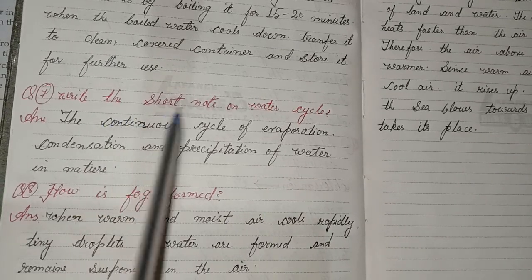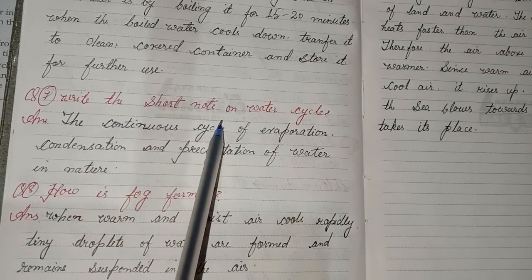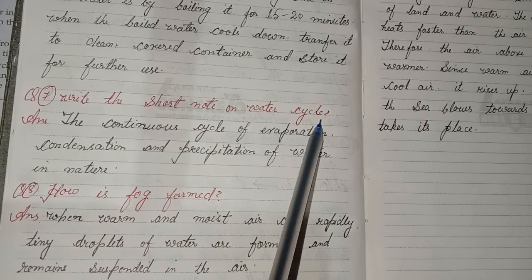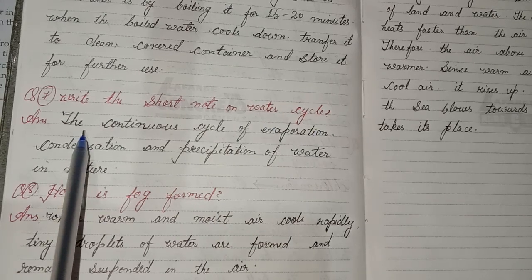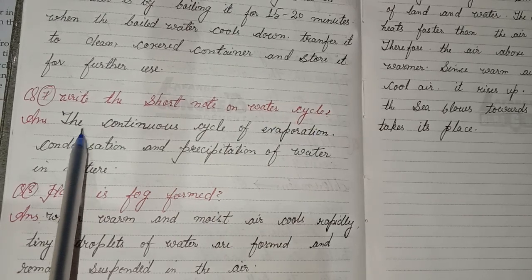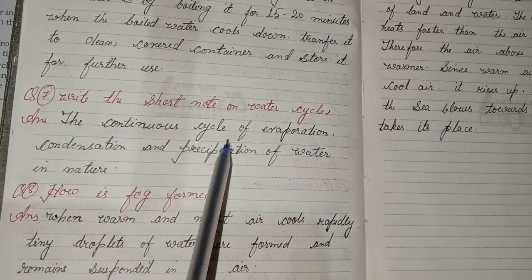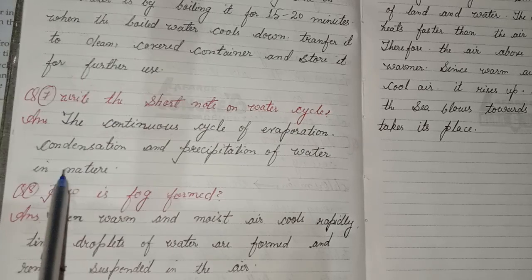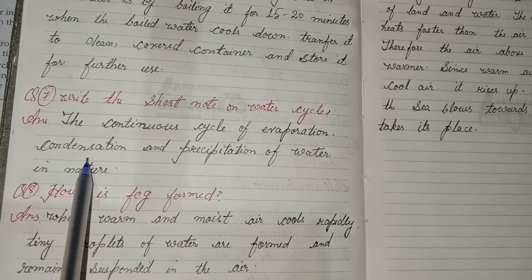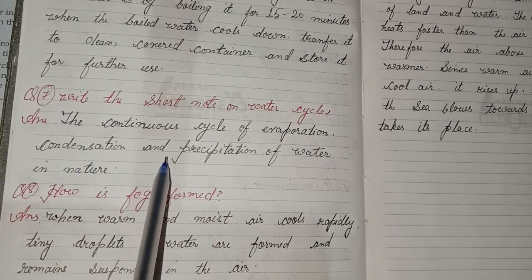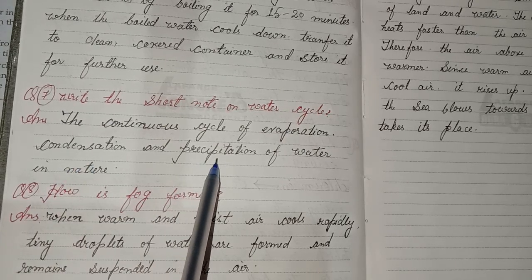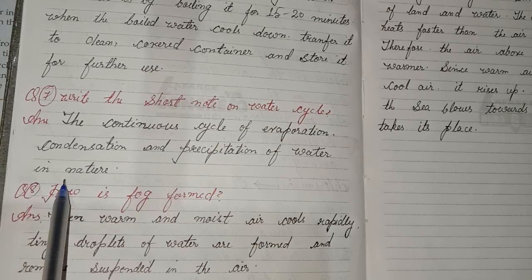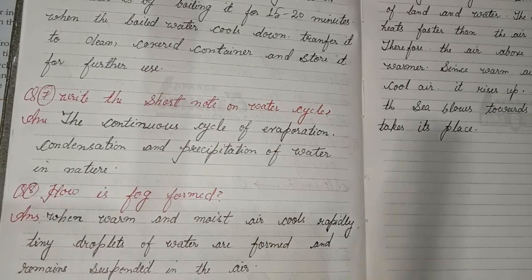Seventh detailed question: Write short notes on the water cycle. Answer: The water cycle is the continuous cycle of evaporation, condensation and precipitation of water in nature.